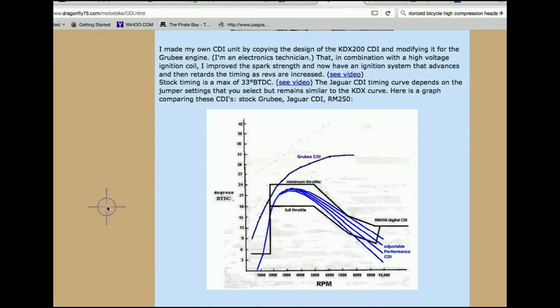On these two-stroke motorized bicycle engines, there's a problem already with the timing. And in their quest to keep the cost as low as possible, they purchased four-stroke CDIs. And if you look at this graph here, you see that this is the timing graph of the stock Groovy CDI, which is typical for a four-stroke.